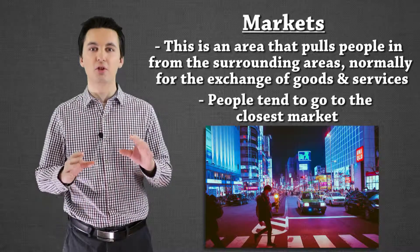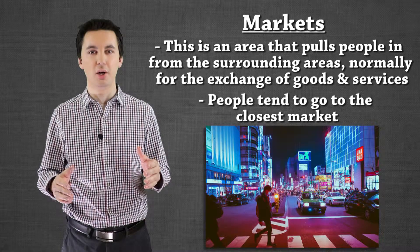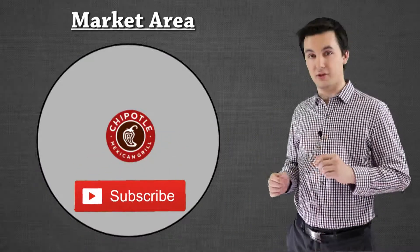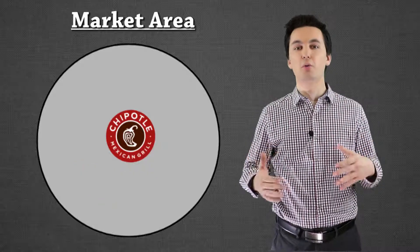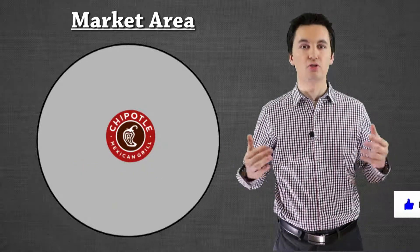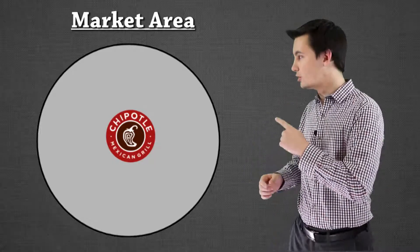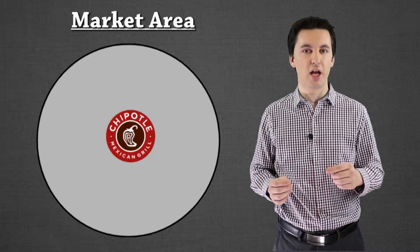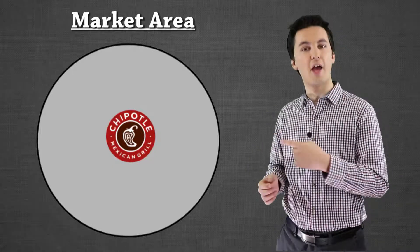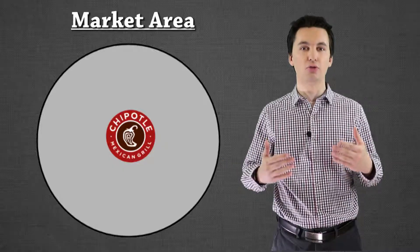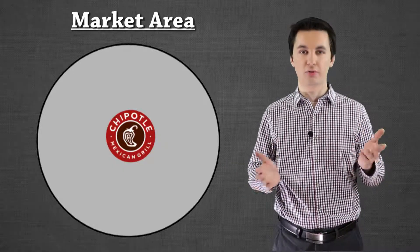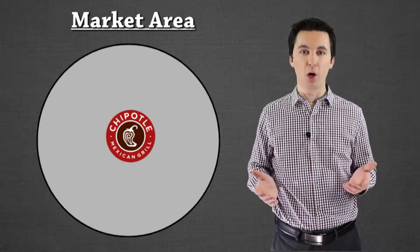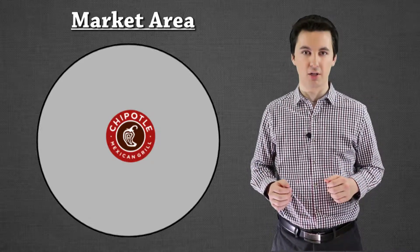On screen you can see a very basic market. In the center I have Chipotle, which would pull everyone within this circle towards it. This circle is our market area, or the hinterland — both terms reference the same thing. Anyone within this circle is in the market area for Chipotle and will go to that location. People outside of the circle would not be part of this market area and would be pulled in a different direction.